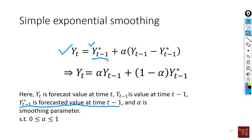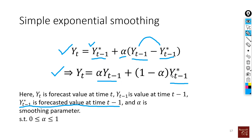Unlike the weighted average or moving average methods, we now include the previous forecasted value to forecast the future. The equation states: the forecasted value equals the previous forecasted value plus alpha multiplied by the difference between the previous actual and forecasted values. Rearranged, this becomes: alpha times y(t-1) plus (1 minus alpha) times the previous forecasted value, where alpha is the smoothing parameter.